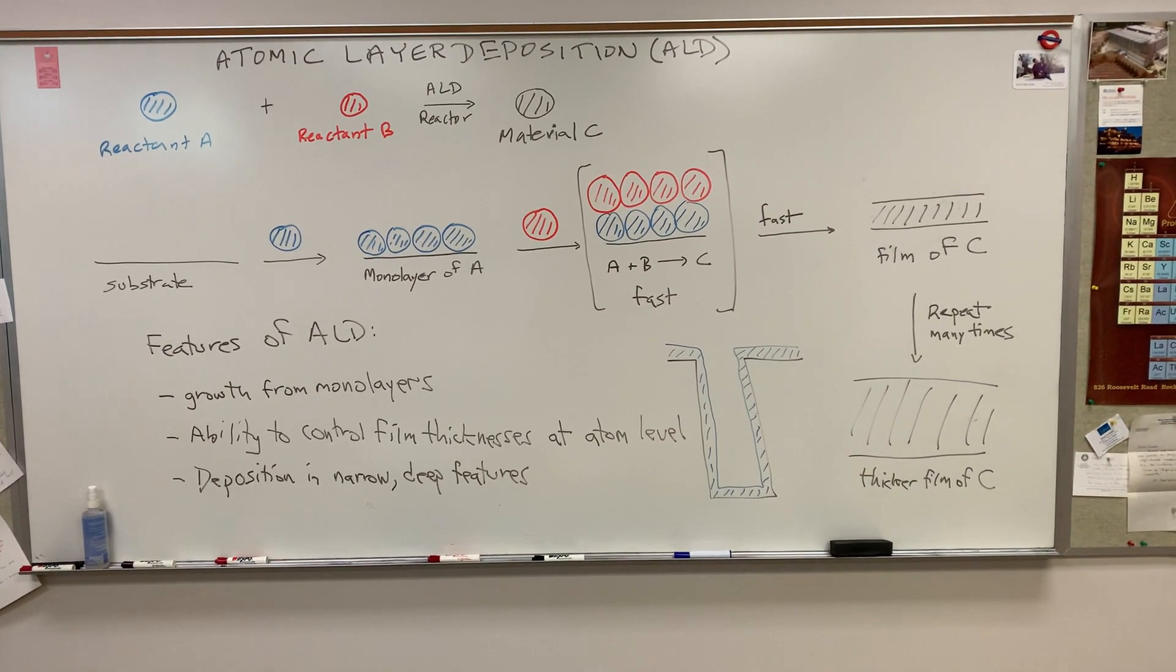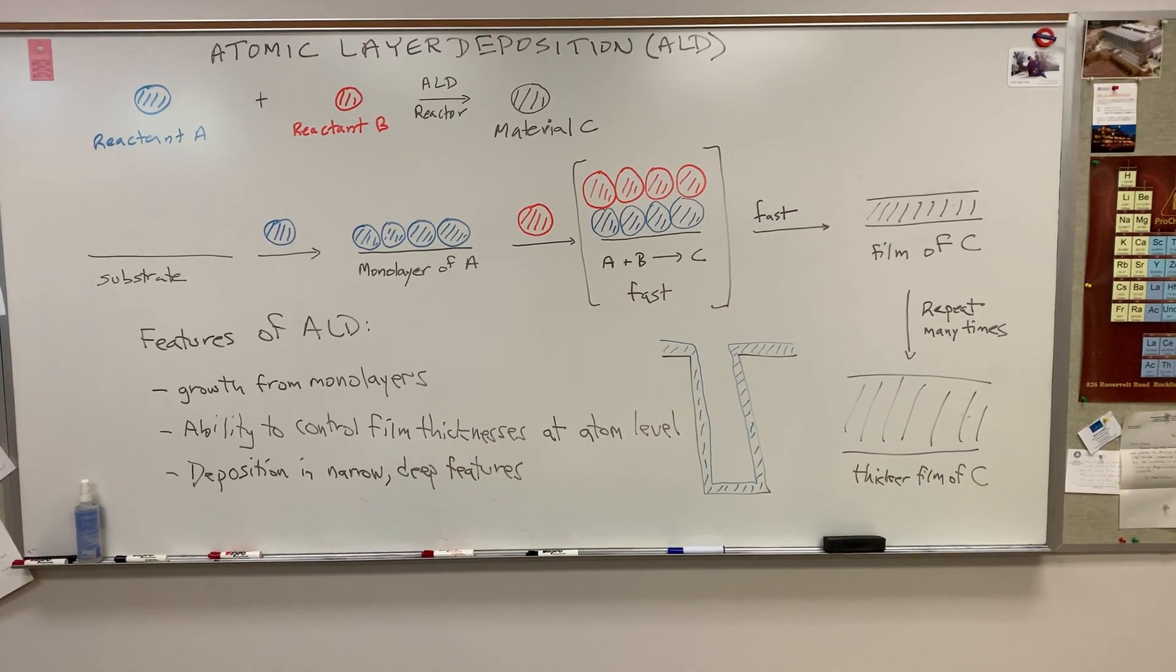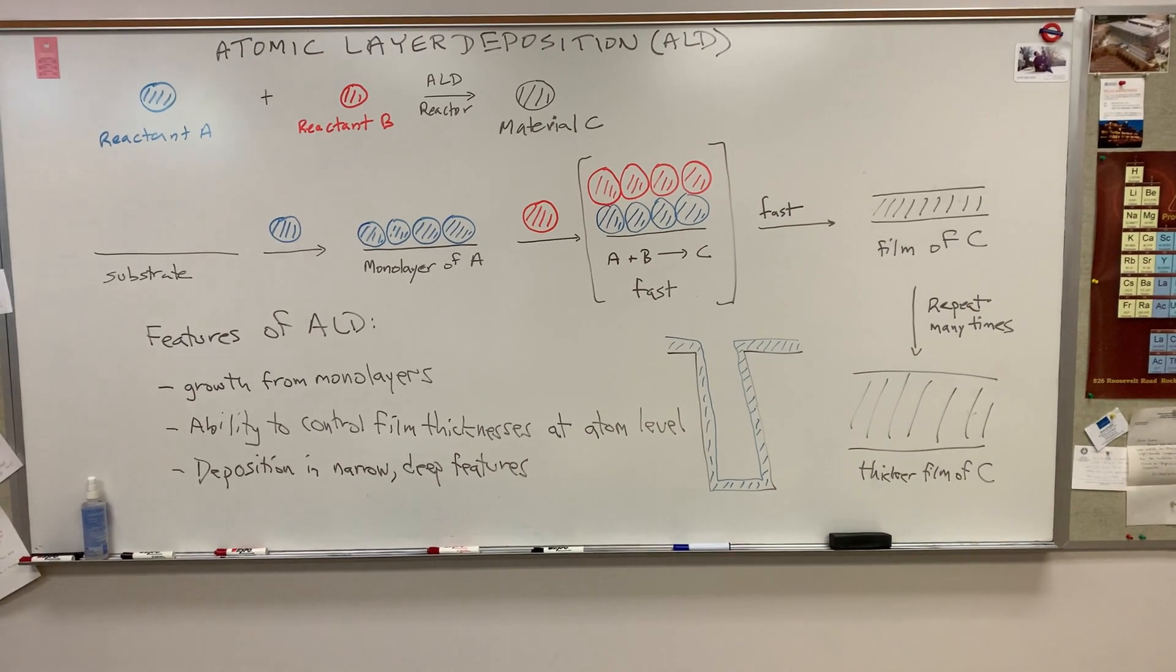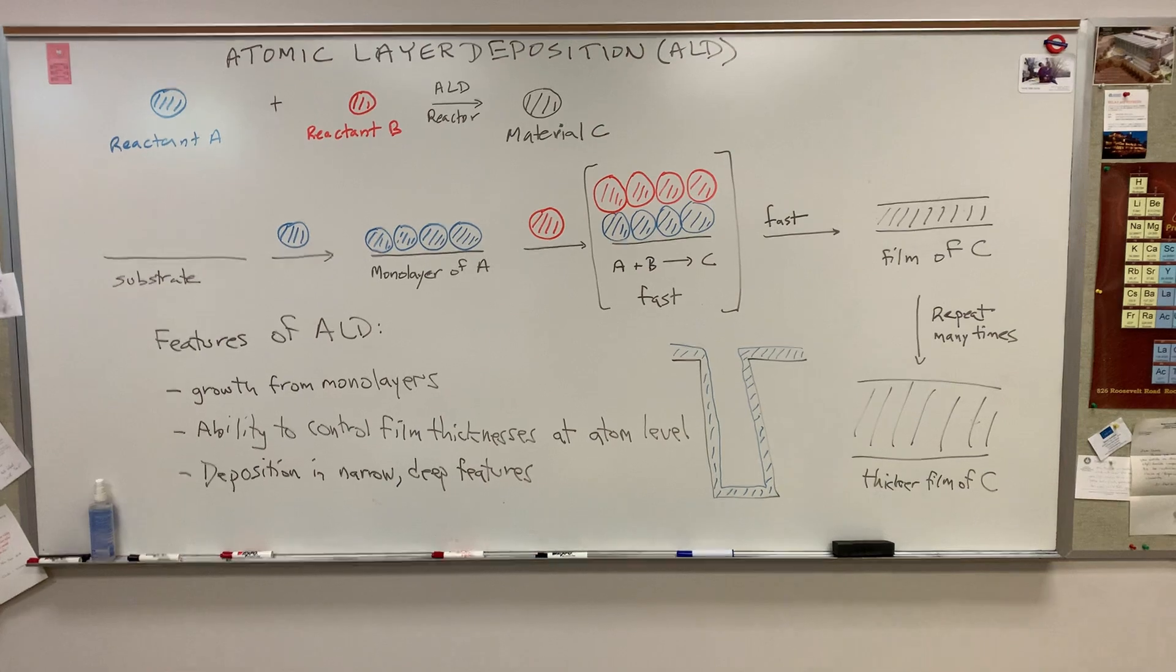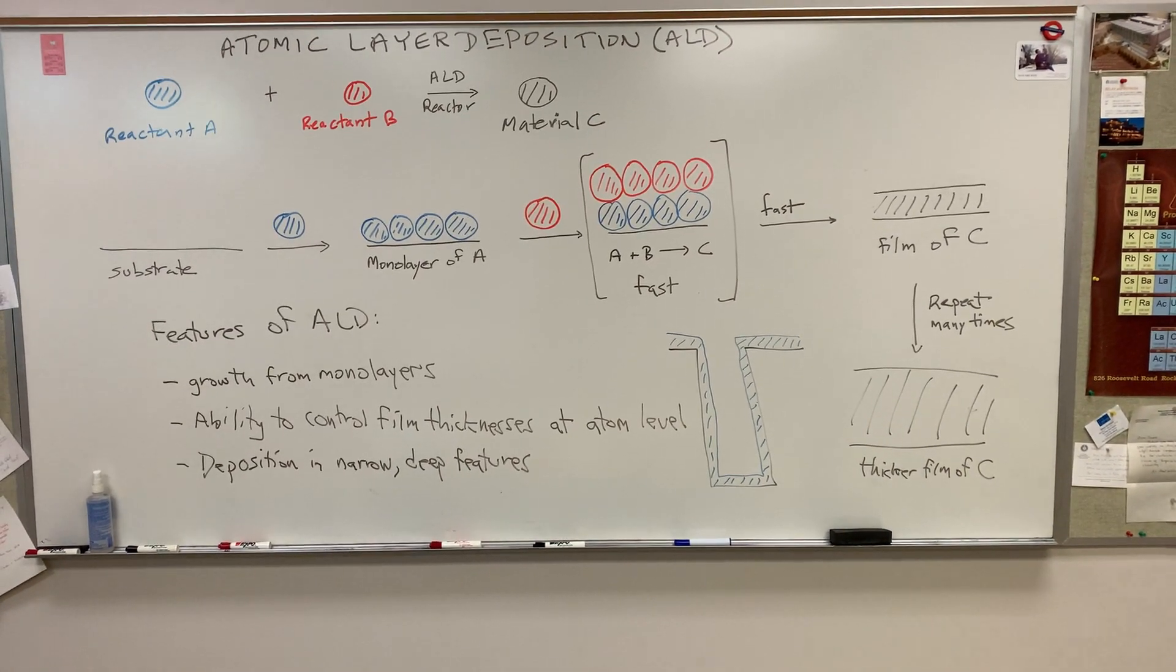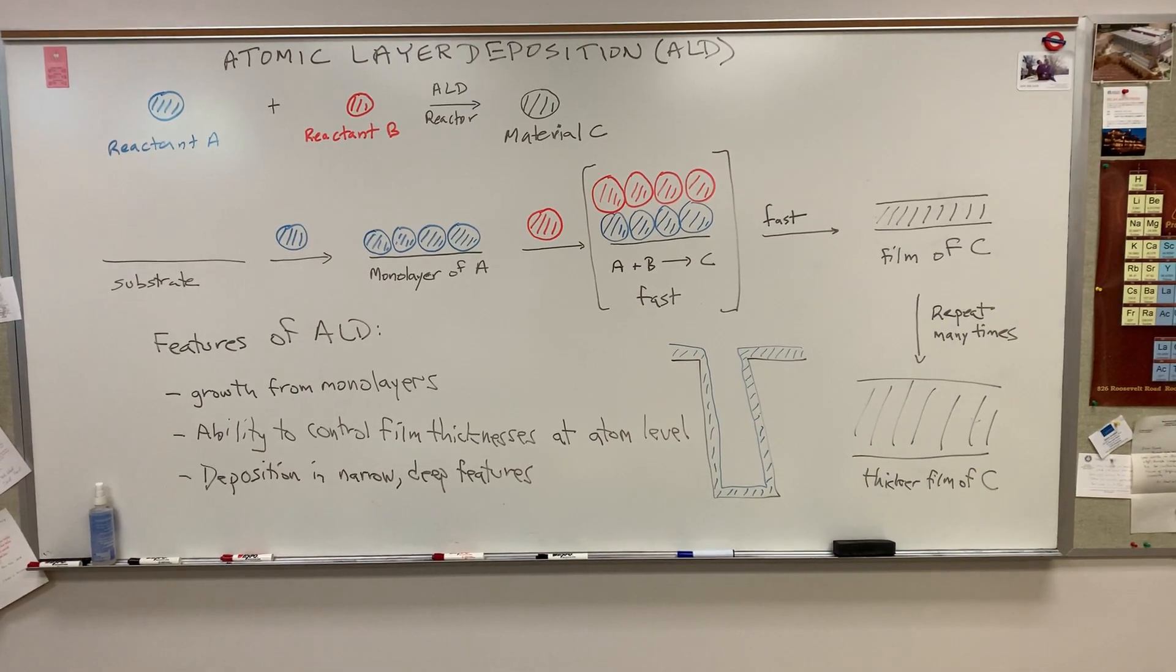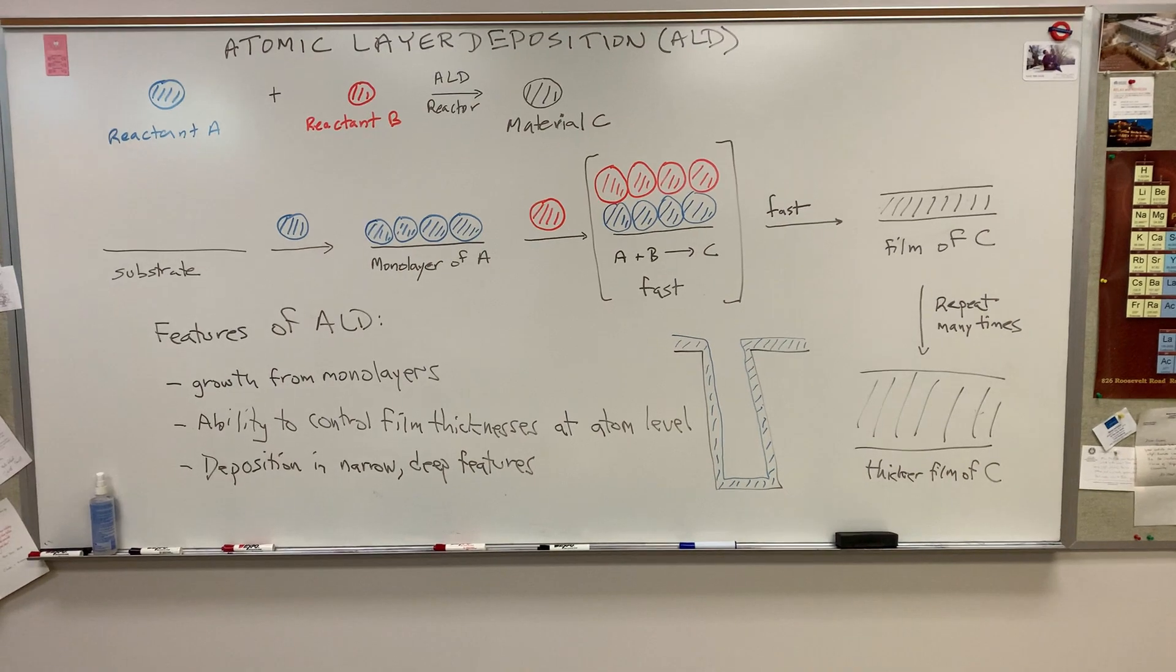And I show in the middle, lower right, the formation of a uniform thickness film of a hypothetical material in a feature where it's deeper than it is wide. And the chemistry and the monolayer growth mechanism of ALD allows this to happen.